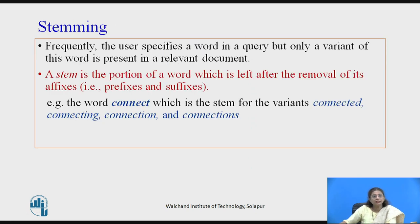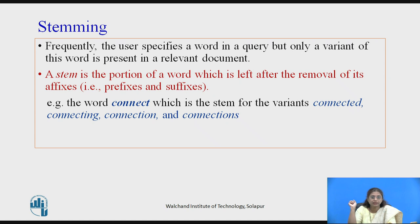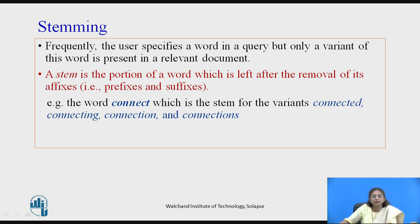Now let us look at the next step, which is stemming. What is stemming? Frequently a user specifies a word in a query, but only a variant of that word is present in the relevant document, or vice versa. The stem is the portion of the word left after removal of affixes — we remove prefixes and suffixes and what remains is the stem. For example, consider 'connected', 'connecting', 'connection', and 'connections' — these are all variants of the word 'connect'. Once we have 'connect', we can retrieve any document connecting all these variations.